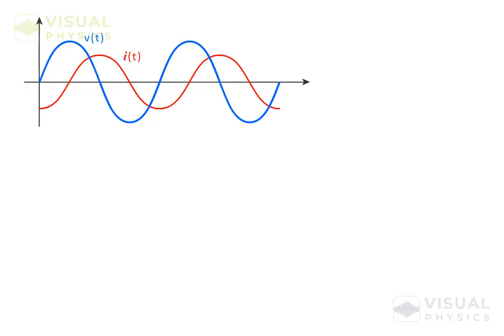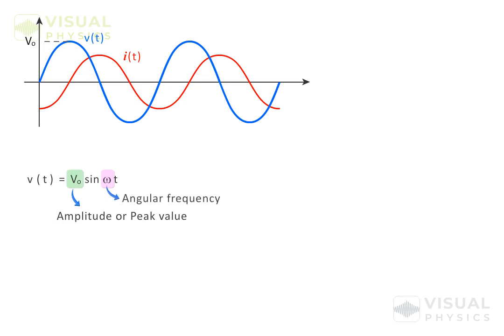We have seen that alternating voltages vary sinusoidally and thus are represented by such an equation. Here, this is the amplitude or the peak value of voltage. And this is the angular frequency of oscillation, which is equal to 2π into the frequency of oscillation.